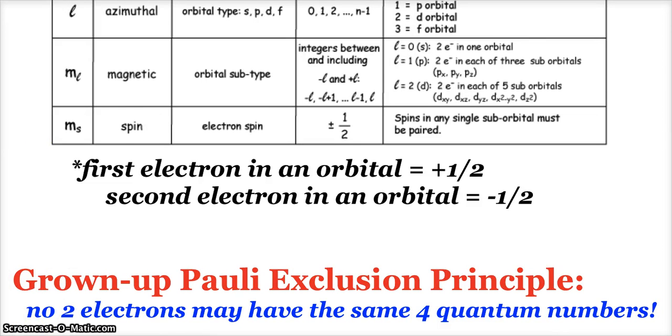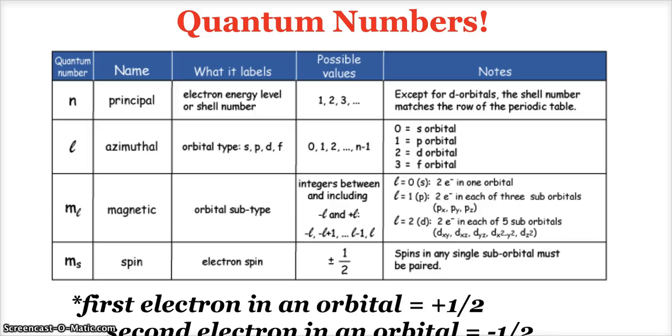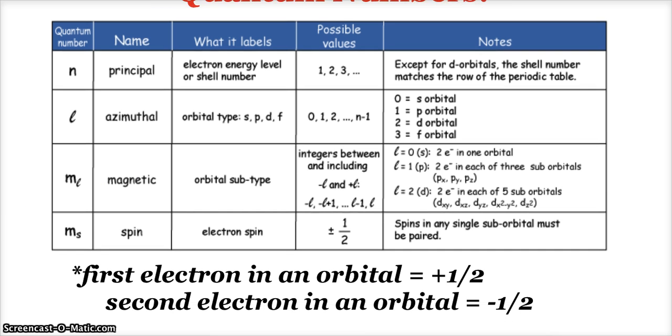We left off talking about quantum numbers. Every electron in an atom has a set of four quantum numbers. First is N, the principal, which tells us what energy level the electron is on. The second number is L, the azimuthal, which tells us what type of orbital. Zero stands for S, one is P, two is D, three is F, and so on. The third quantum number is the magnetic, and it tells us which orbital the electron is in if you have multiple orbitals on a sublevel. The spin tells us if it's the first or second electron in the orbital. Plus one half means first, minus one half is second.